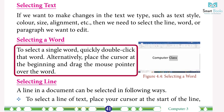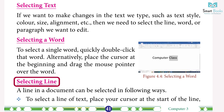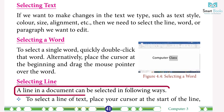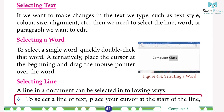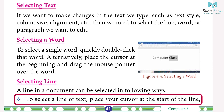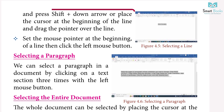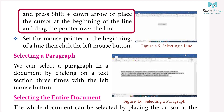Alternatively, to select a word, place the cursor at the beginning and drag the mouse pointer over the word. Selecting Lines: to select a line of text, place your cursor at the start of the line and press Shift + Down Arrow, or place the cursor at the beginning of the line and drag the pointer over the line.